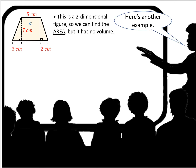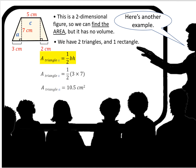Here's another example. This is a two-dimensional figure, so we can find the area, but it has no volume. When you look at this figure, you see that we have two triangles and one rectangle. We're going to find the area of one of the triangles — let's call it triangle A. Using one-half base times height, we get one-half times 3 times 7, which is 10.5 centimeters squared.